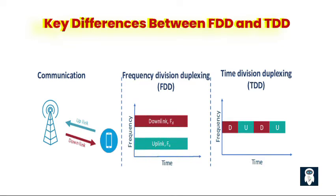Second, spectrum utilization: FDD requires dedicated frequency bands for uplink and downlink, meaning the available frequency spectrum needs to be divided into two separate bands, which can limit overall spectrum efficiency. TDD utilizes a single frequency band for both uplink and downlink communication — the uplink and downlink transmissions share the same frequency channel, resulting in more efficient spectrum utilization. Third, synchronization requirements: in FDD, synchronization between the transmitting and receiving devices is not as critical. As long as the devices operate within their allocated frequency bands, separate timing synchronization is not required. In TDD, precise timing synchronization is heavily relied upon — all devices must be synchronized to a common time reference to ensure proper switching between uplink and downlink time slots.